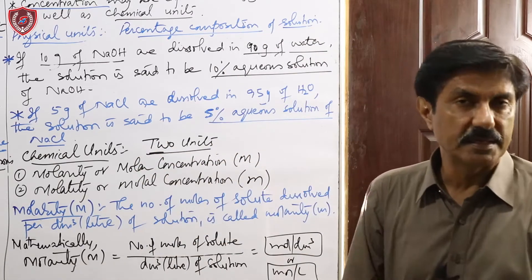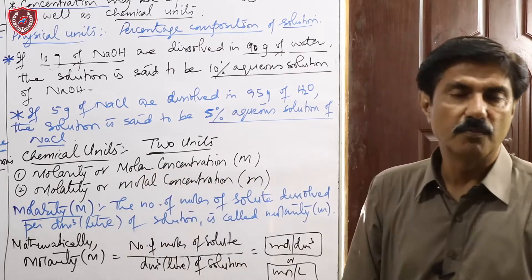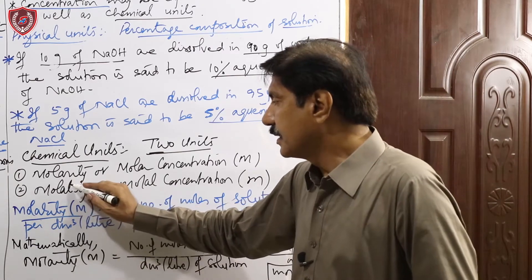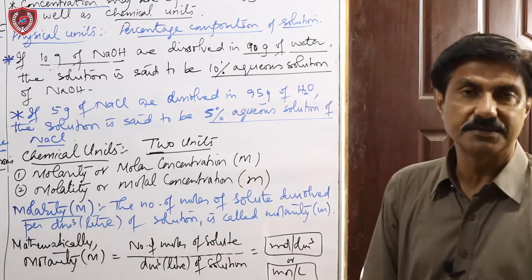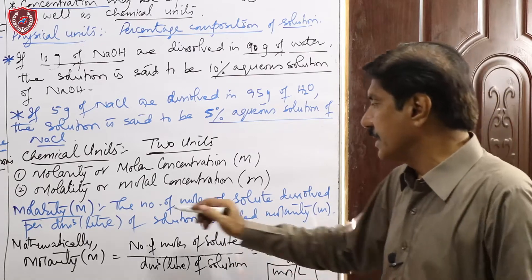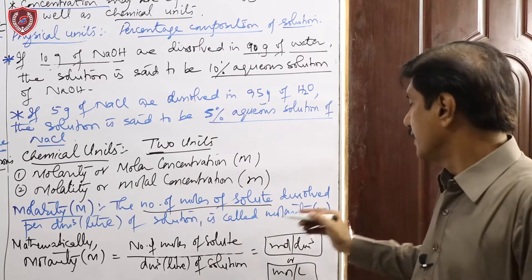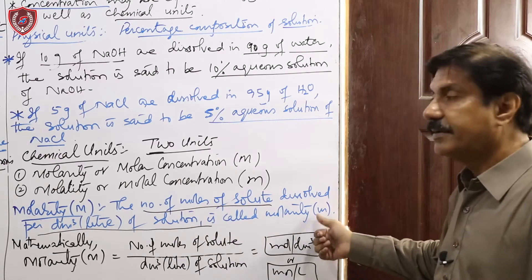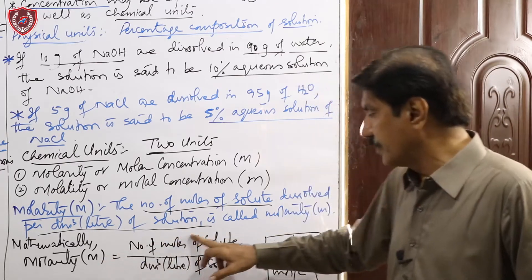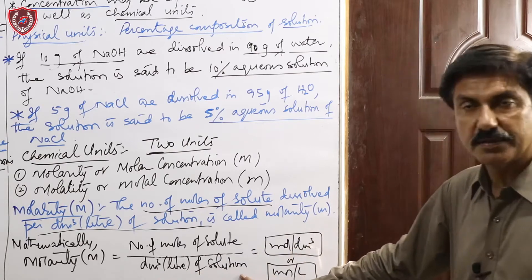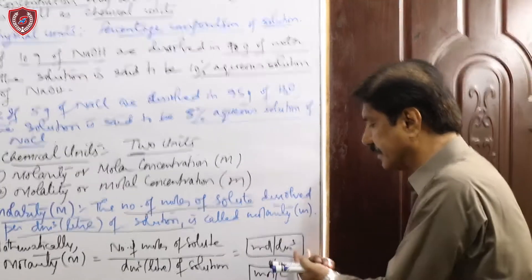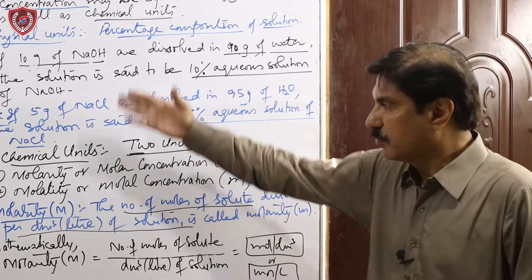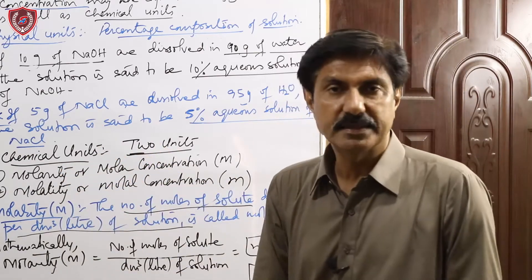Chemical units میں دو units ہیں: پہلا molarity — جسے molar concentration بھی کہتے ہیں، capital M سے symbolize کرتے ہیں۔ دوسرا molality — symbol small m، molal concentration بھی کہتے ہیں۔ Molarity کی definition: number of moles of solute dissolved in one litre or dm³ of solution. Mathematically: M = moles of solute / volume of solution in dm³ or litres. Unit: mol per dm³ or mol per litre۔